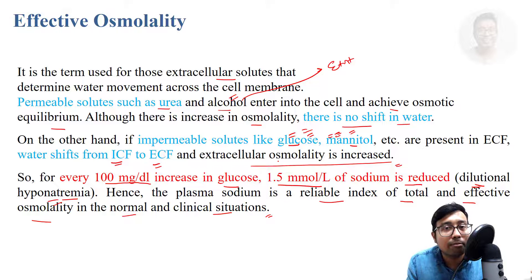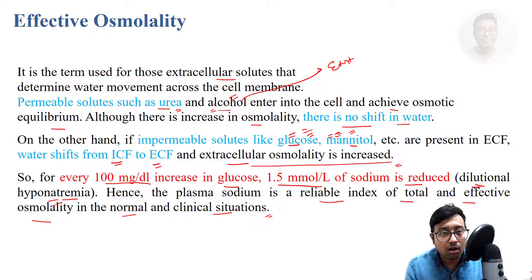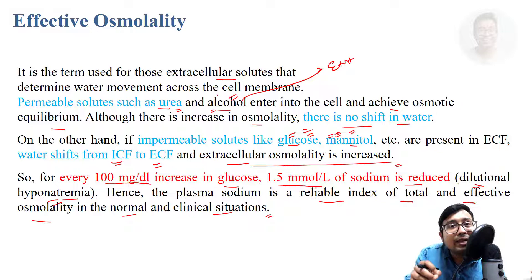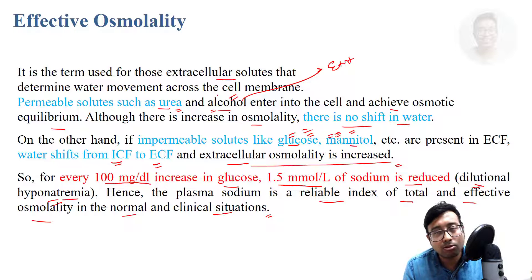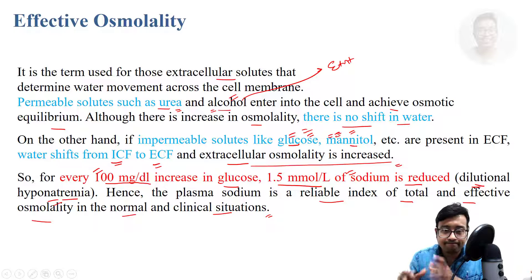An osmotic equilibrium is achieved. Whereas in the case of urea and alcohol — if present in excess in extracellular fluid — water need not move out. Instead, alcohol and urea themselves go into the cell and maintain osmotic equilibrium. Remember: 100 mg/dL increase in glucose leads to 1.5 millimole reduction in sodium — dilutional hyponatremia.